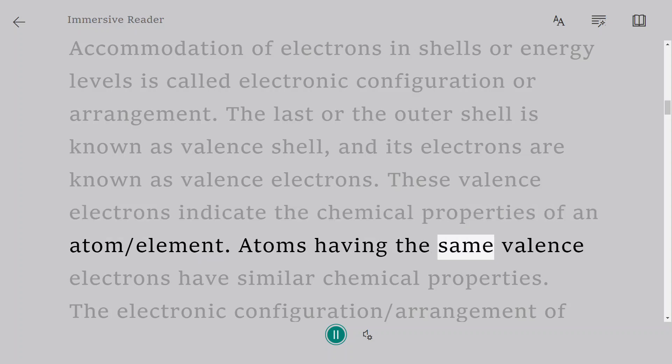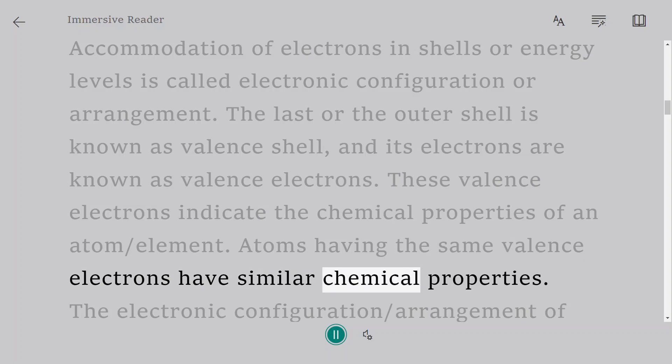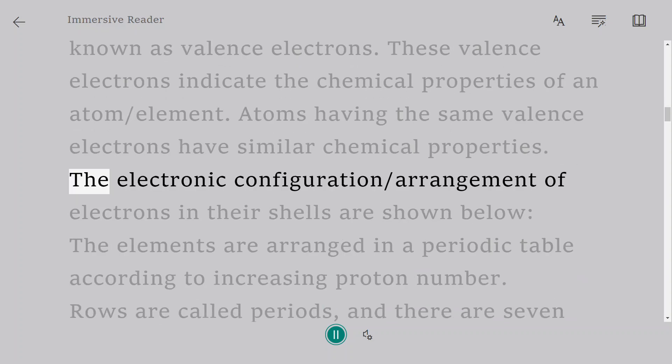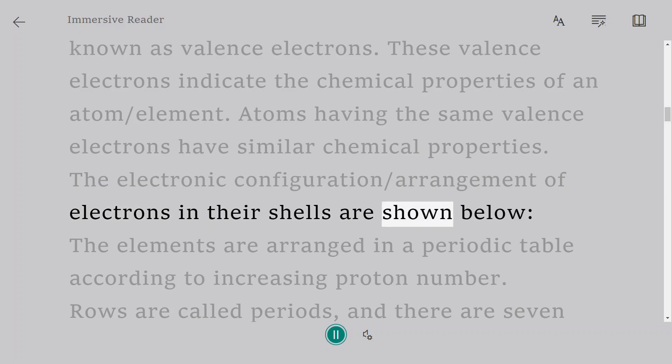Atoms having the same valence electrons have similar chemical properties. The electronic configuration/arrangement of electrons in their shells are shown below.